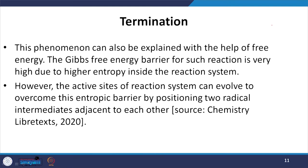This phenomenon can also be explained with the help of Gibbs free energy, which plays a very vital role in deciding the fate of any chemical reaction, whether it is a polymerization reaction or a normal reaction. The Gibbs free energy barrier for such a reaction is very high due to higher entropy inside the reaction system. However, the active sites of the reaction system can evolve to overcome this entropic barrier by positioning two radical intermediates adjacent to each other. The termination step of a free radical usually occurs in two ways: either by coupling reaction (combination) or by disproportionation.